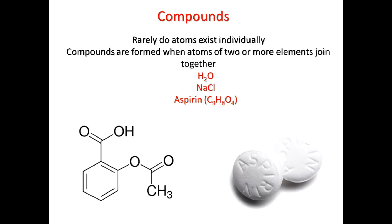Rarely do atoms exist individually. Compounds are where the real interest is — they're formed when atoms of two or more elements join together. A couple of examples: we've already talked about sodium chloride, which is NaCl. The second example is H₂O — two hydrogen atoms and an oxygen atom combined in a two-to-one ratio to give you water. Water is incredibly important to all of us; without water, we would not exist.